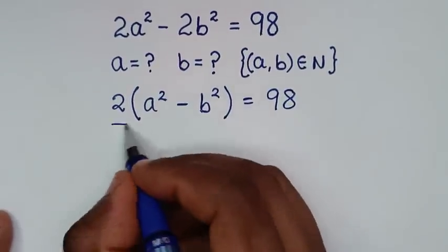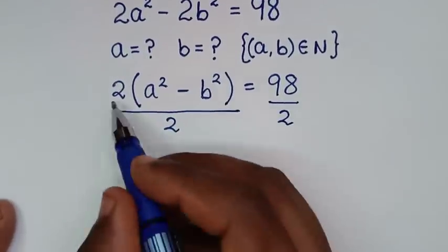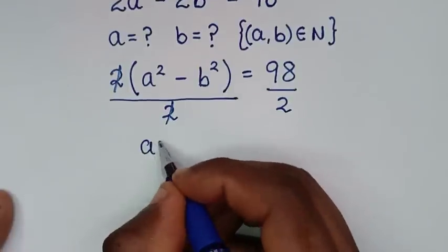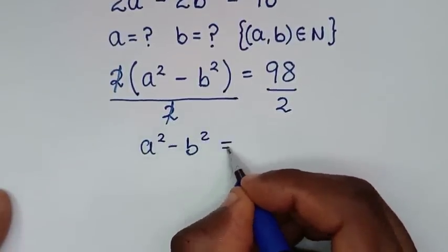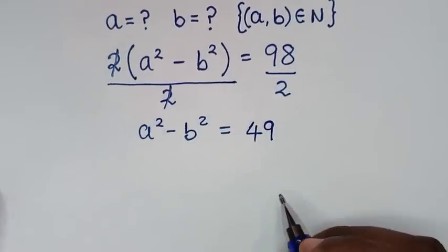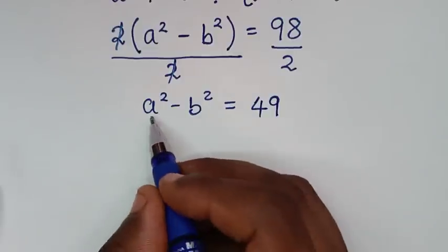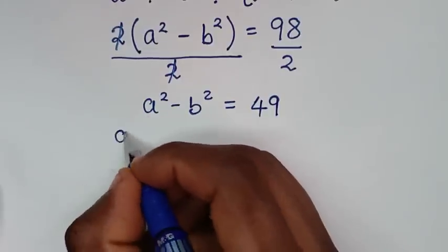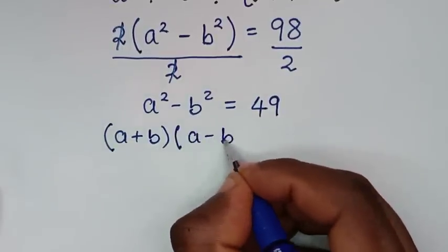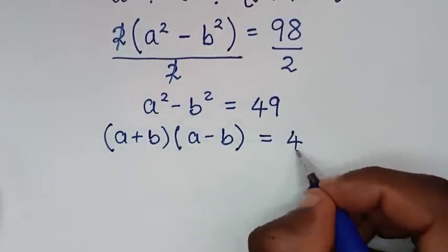In the next step, we divide by 2 on both sides. The 2s cancel, giving us a squared minus b squared equals 98 divided by 2, which is 49. From here, a squared minus b squared is in the form of a difference of squares, which equals (a + b)(a − b) = 49.